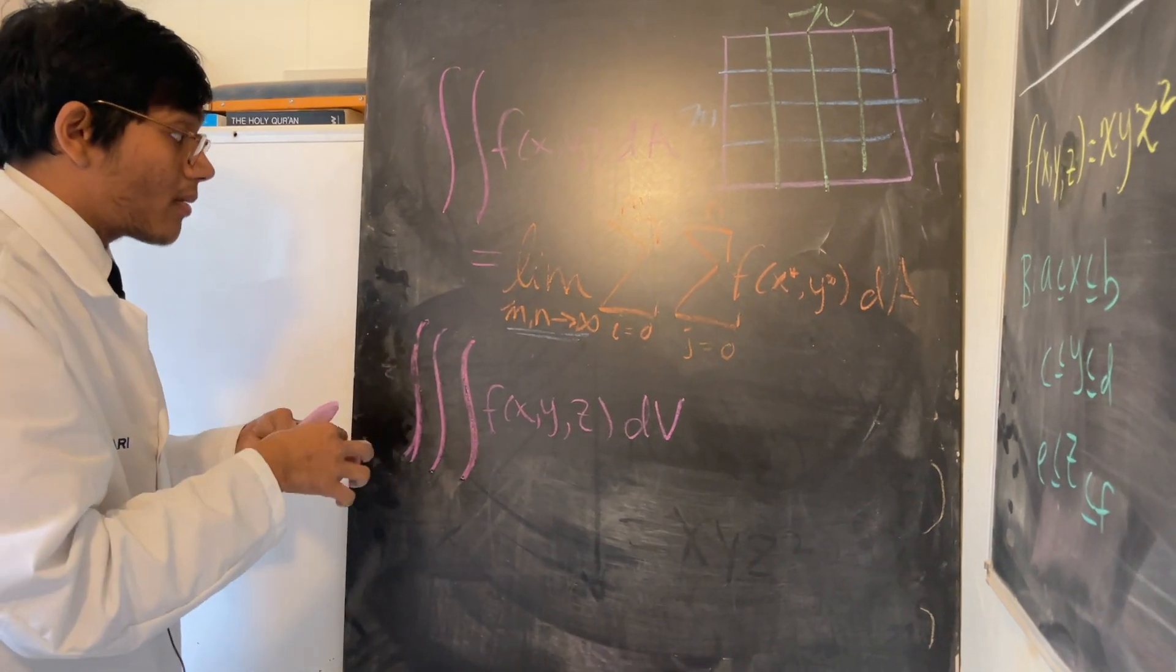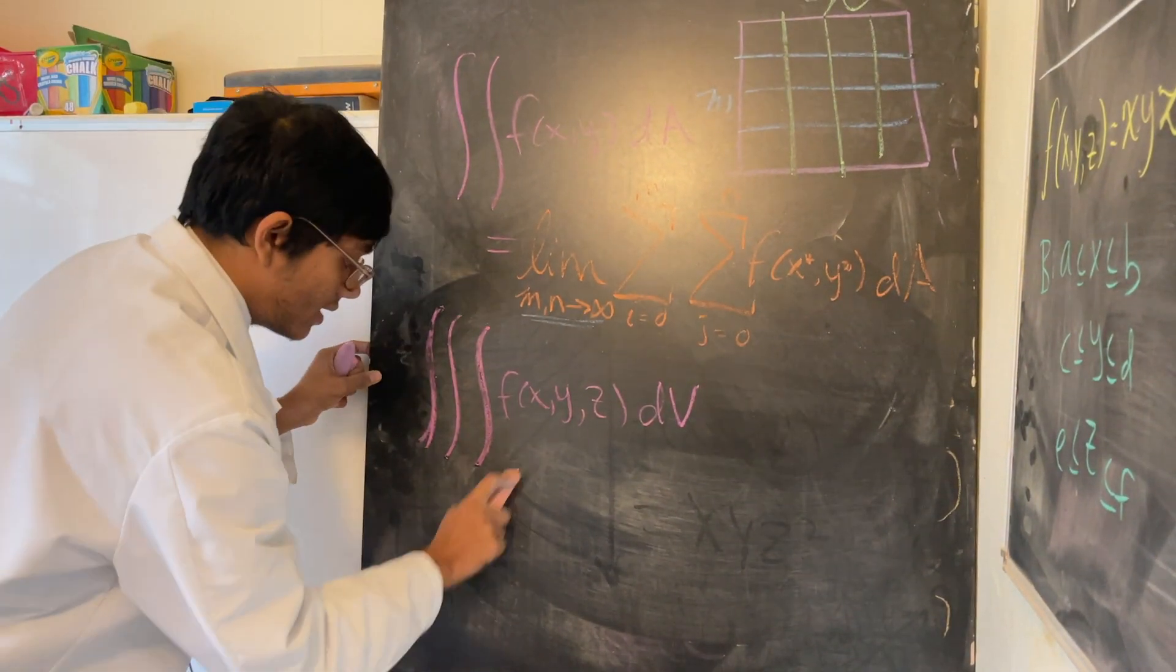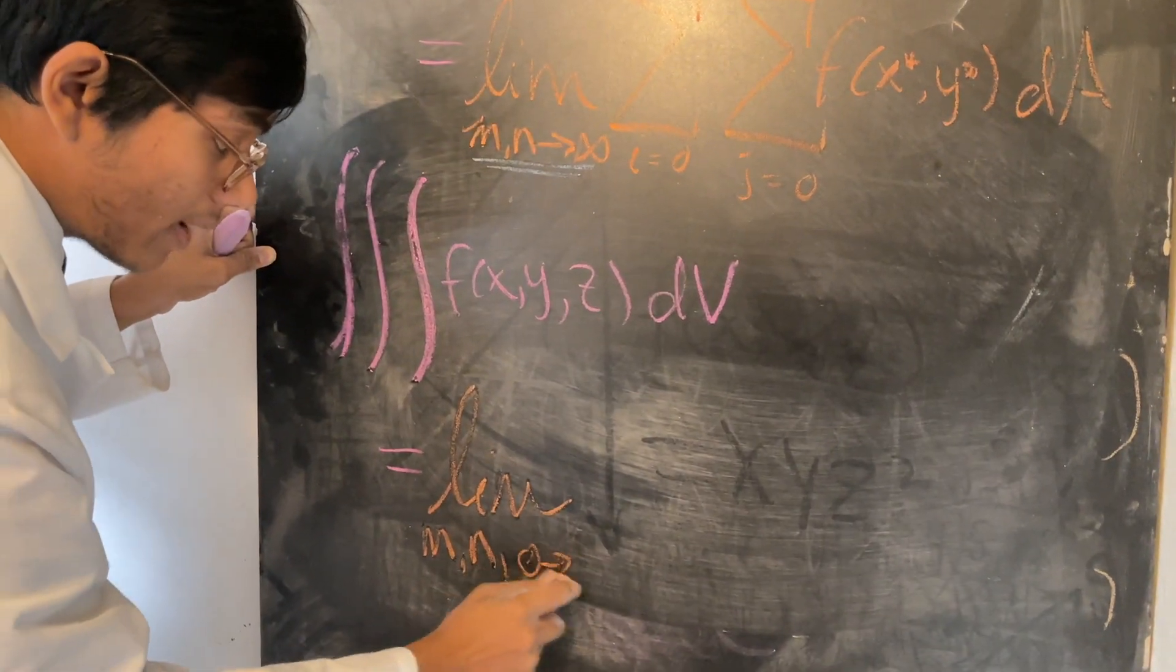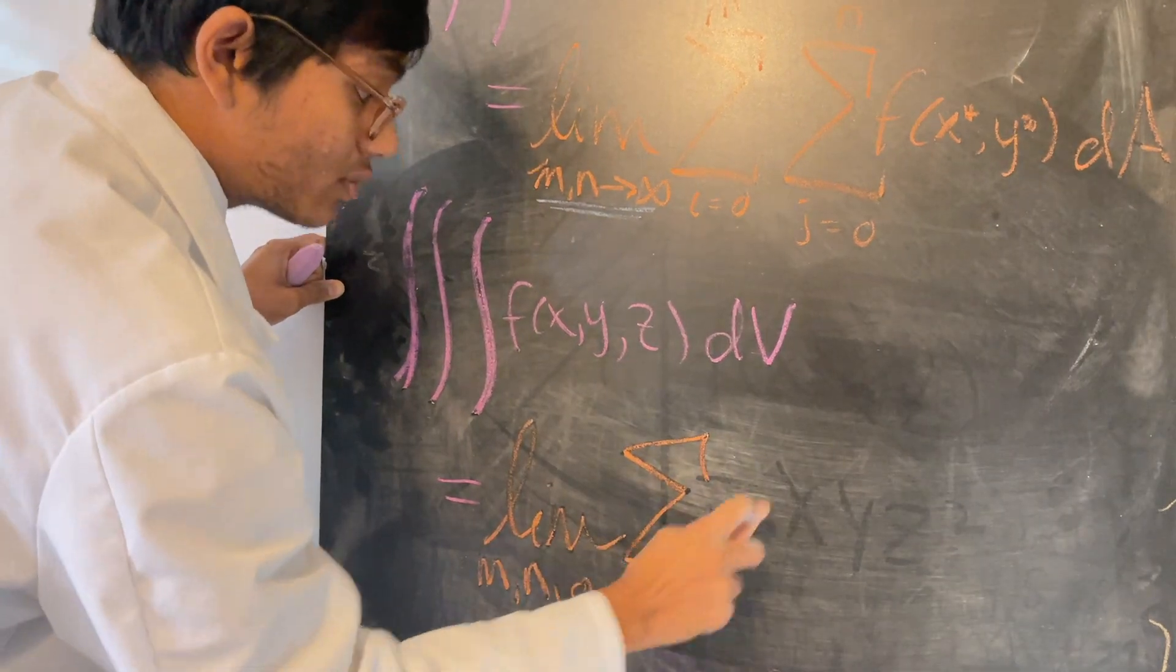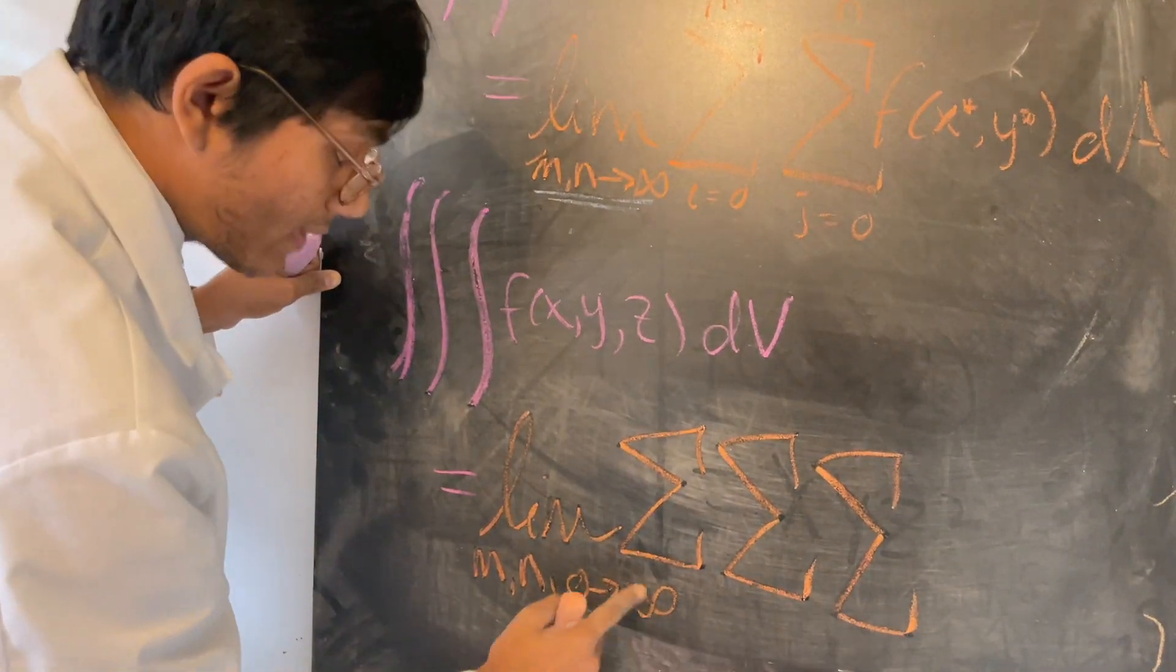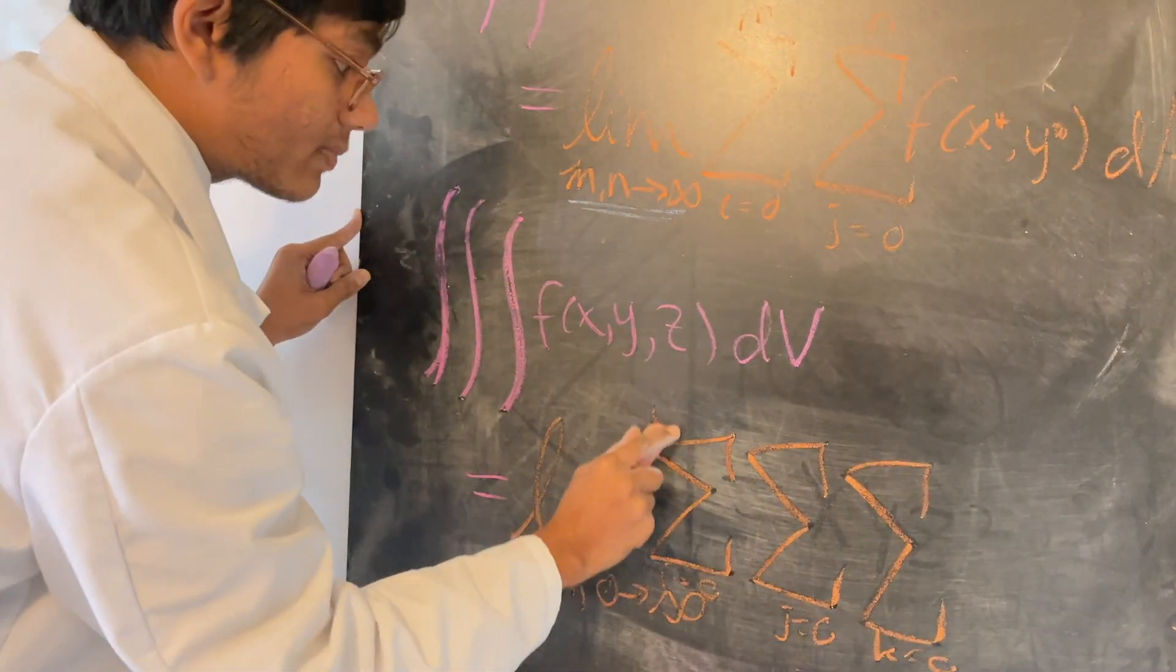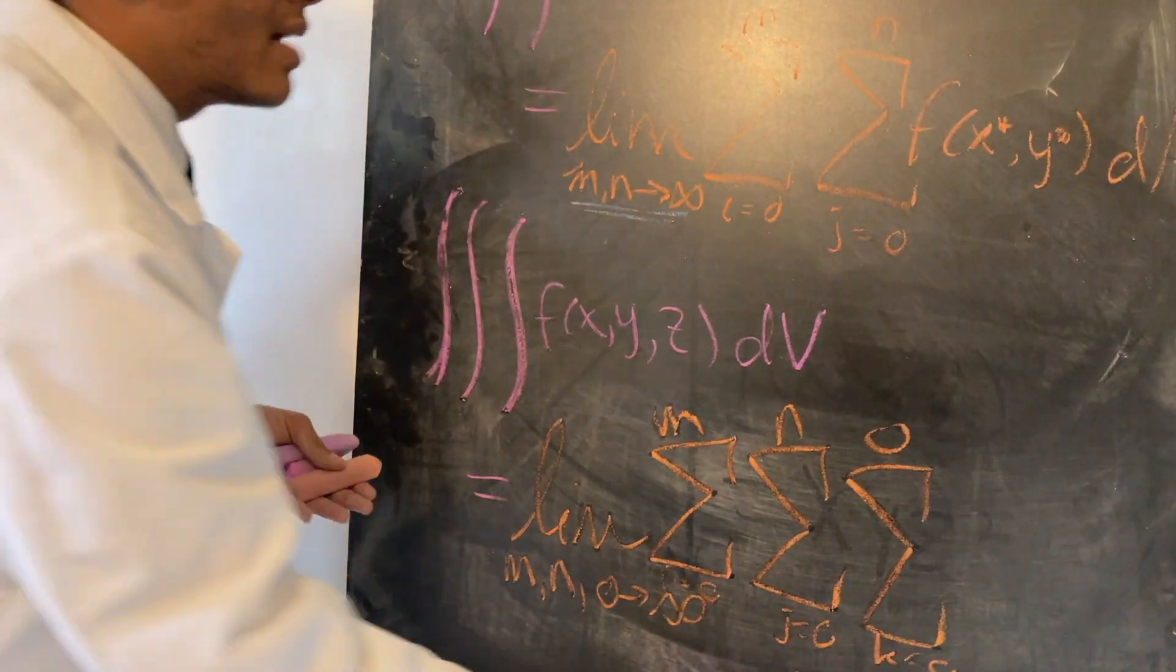So that's going to look something like this: limit as not M and N approach infinity, but M, N, and O approach infinity, because now we have three kinds of partitions. And so we're going to have three—not one, not two, but three—Riemann sums. And here I can say i starts at zero, j starts at zero, k starts at zero, and each one of these partitions go to infinity so our approximation becomes infinitely precise.